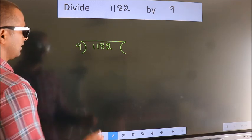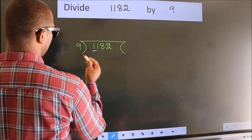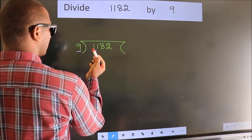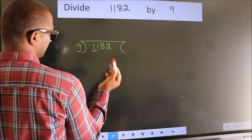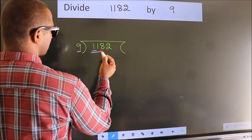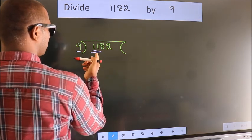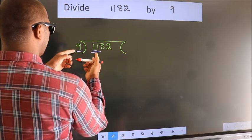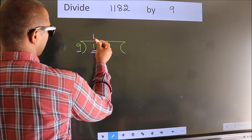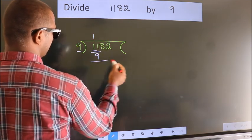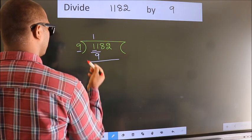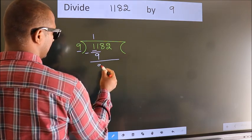Next, here we have 1, here 9. 1 is smaller than 9, so we should take 2 numbers: 11. A number close to 11 in the 9 table is 9 times 1 equals 9. Now we should subtract. We get 2.